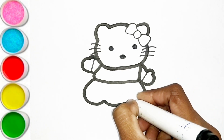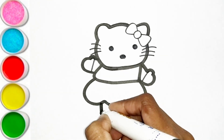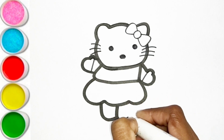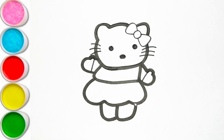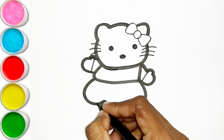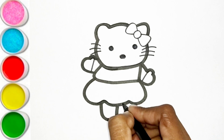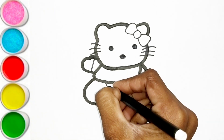E is for Elephant, E-E-Elephant. F is for Frog, F-F-Frog. G is for Goat, G-G-Goat. H is for Hand, H-H-Hand.